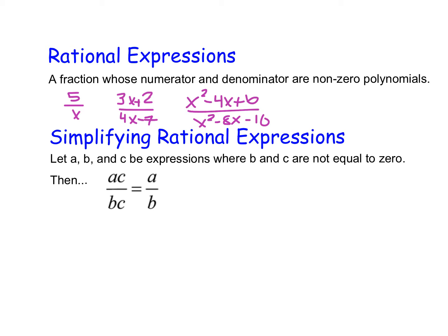Regardless of whether we have something simple or more complicated, it's all the basic idea that a numerator and a denominator are both nonzero polynomials that make up this fraction. What we're going to focus on in this video is how we can simplify rational expressions, using a simple property and our knowledge of factoring.